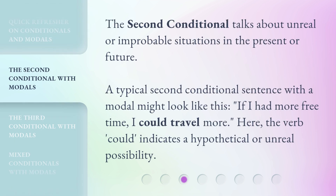The second conditional talks about unreal or improbable situations in the present or future. A typical second conditional sentence with a modal might look like this: if I had more free time, I could travel more. Here, the verb 'could' indicates a hypothetical or unreal possibility.